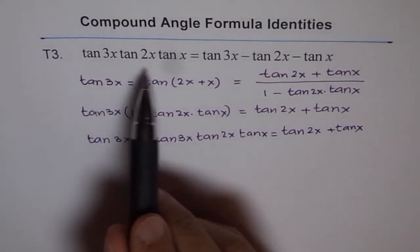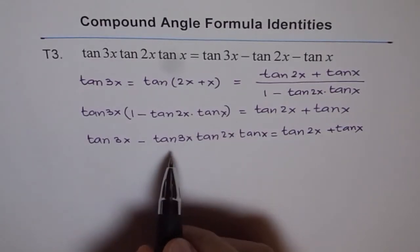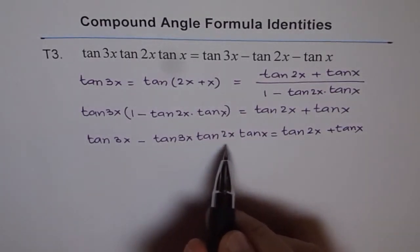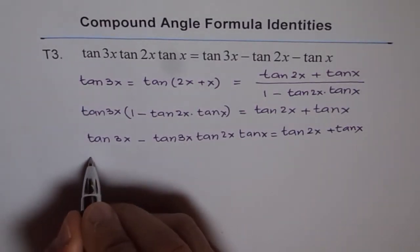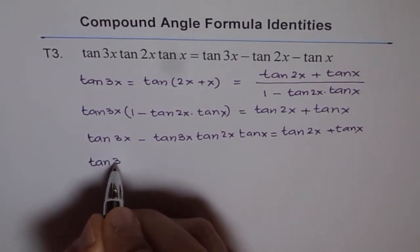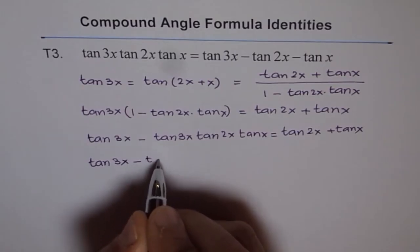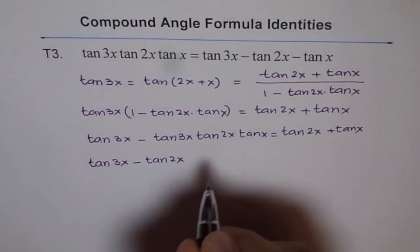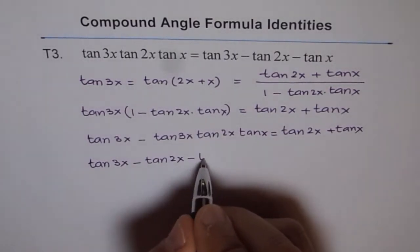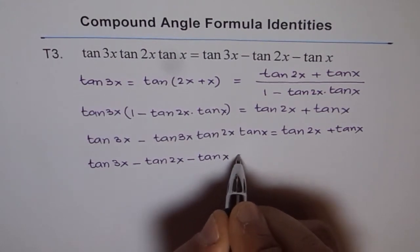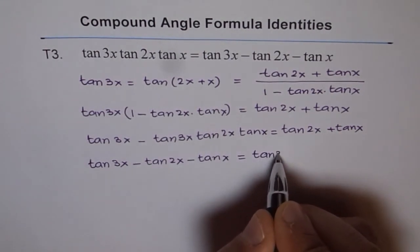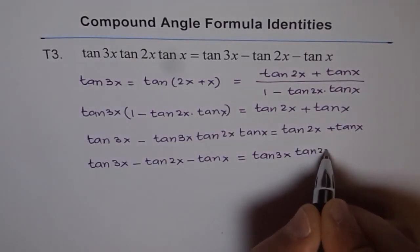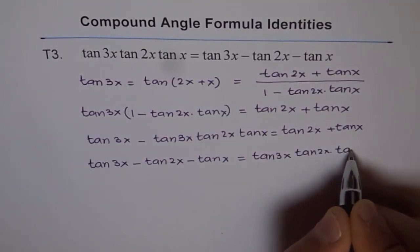And now we need what? We need product as differences. So the product is this. We can take it on that side and bring those terms here. So we get tan 3x minus tan 2x minus tan x equals to, we'll take this there, we get tan 3x tan 2x times tan x.